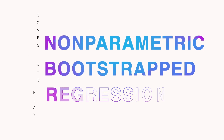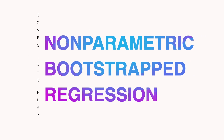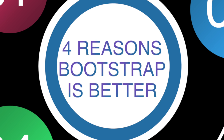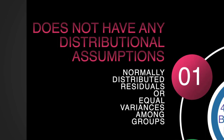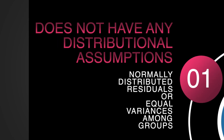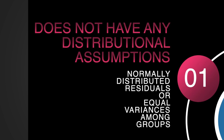And here is where non-parametric bootstrap regression comes into play. The first reason a bootstrap model is better than a usual linear model is that bootstrapping does not have any distributional assumptions, such as normally distributed residuals or equal variances among groups.